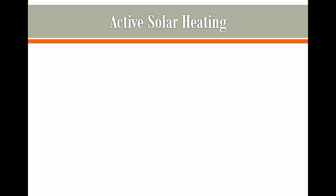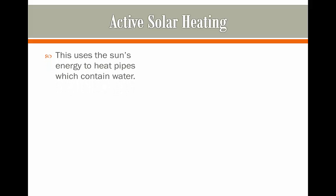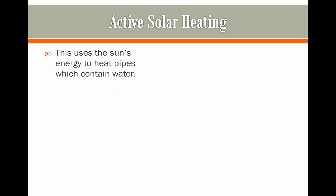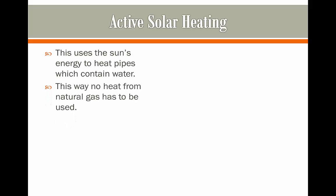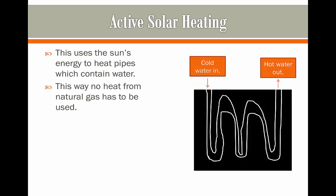Next we're going to look at active solar heating. This uses the Sun's energy to heat pipes which contain water. This way no heat from natural gas has to be used — we can just use the Sun to do it. Here we have a black backing with pipes which travel along this matte surface, which are then going to be taking in the Sun's rays.